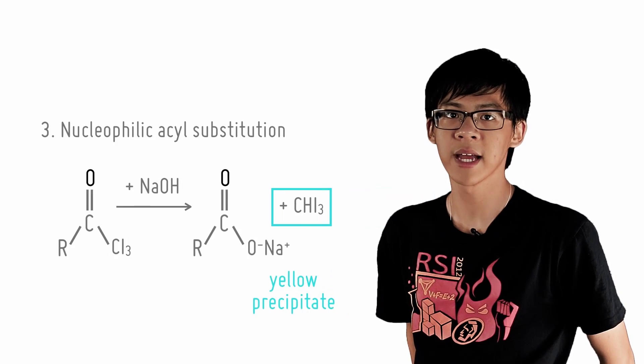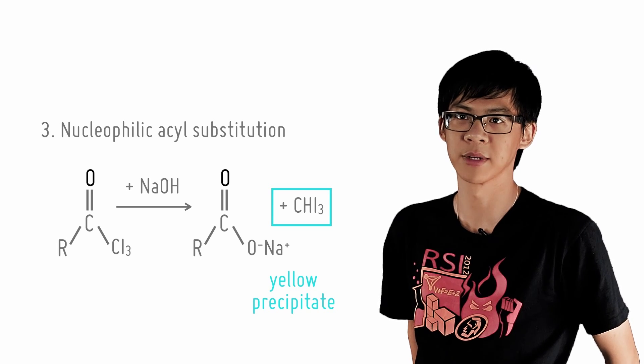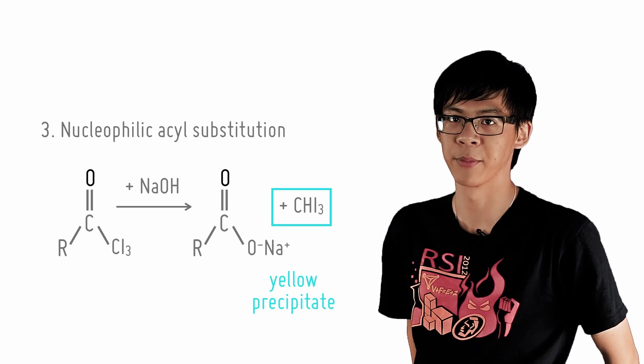Subsequently, nucleophilic acyl substitution occurs and the NaOH attacks to form the carboxylate as well as triiodomethane as a byproduct.